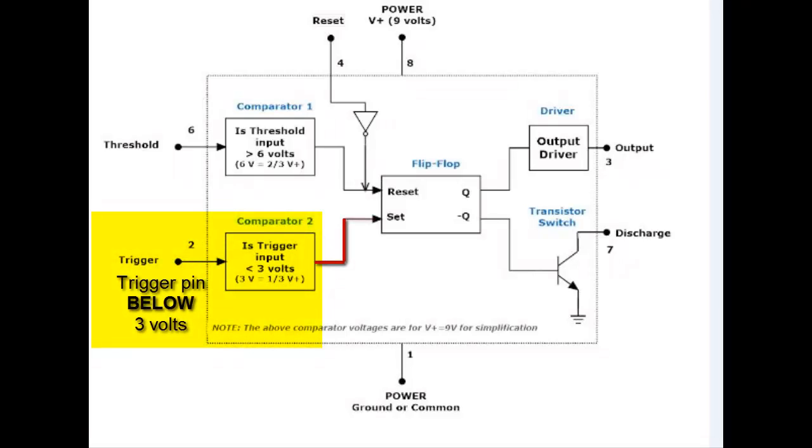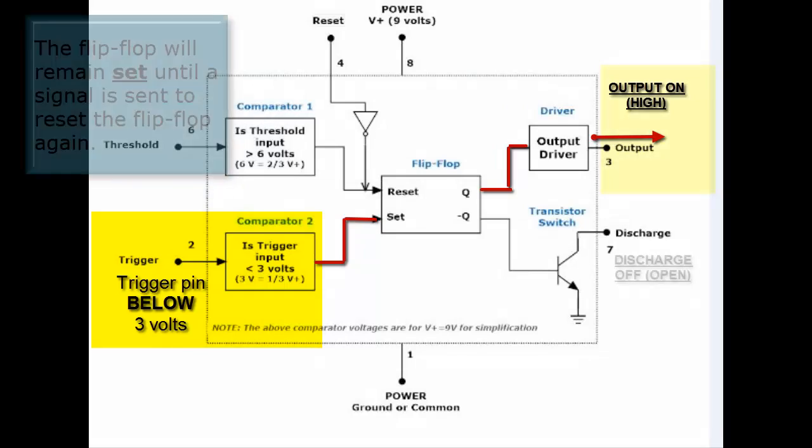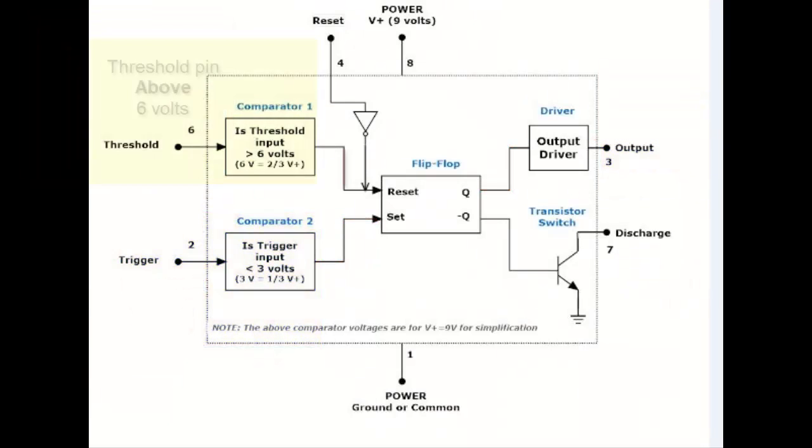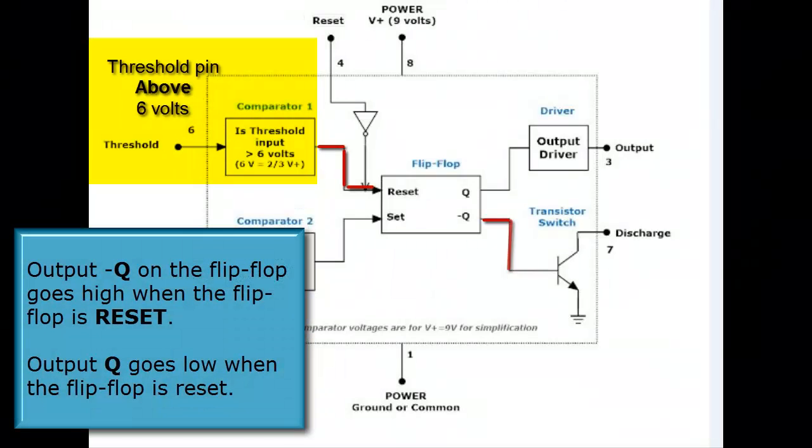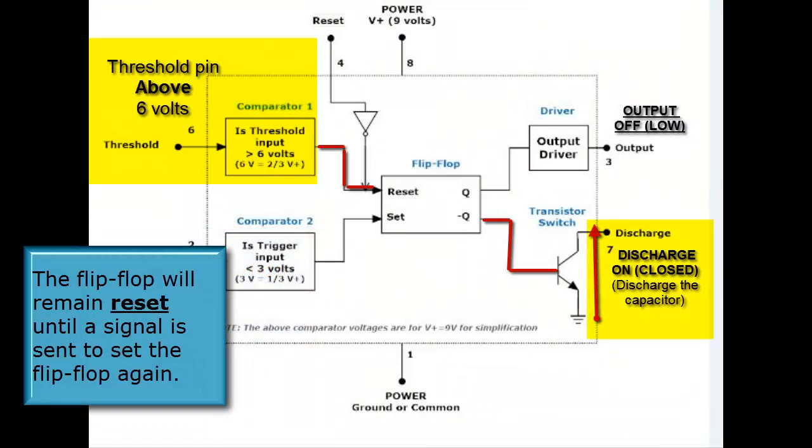Now here we have an animation. If you look at the trigger then when the trigger pin is below 3 volts we set the flip-flop which causes Q to go high which causes the output to go high and the discharge switch to go off. And in the next case if the threshold pin is above 6 volts then we reset the flip-flop which turns the discharge switch on and the output off.